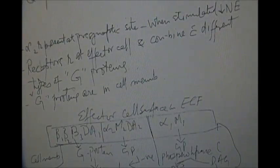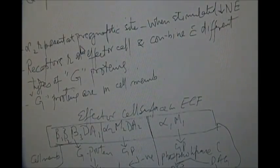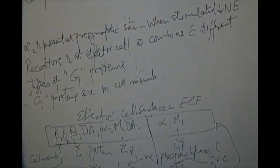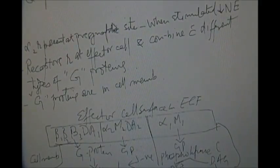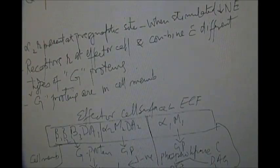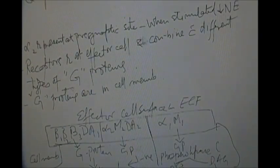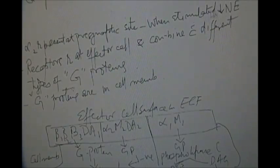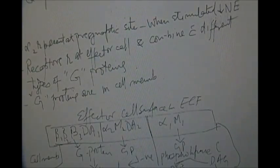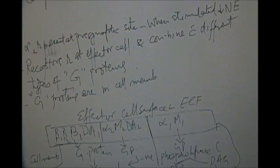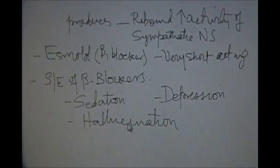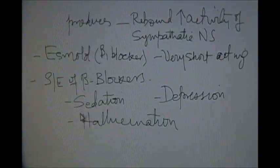The alpha 2 receptors, when present at the preganglionic site, they release noradrenaline, so they inhibit the noradrenaline from the postganglionic site.